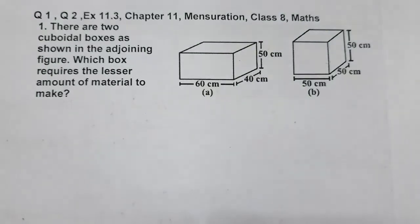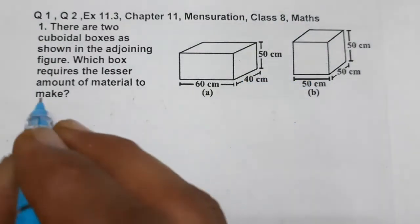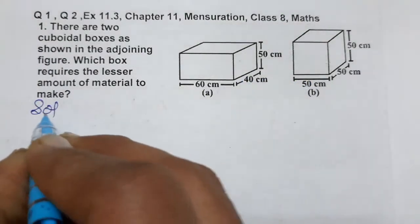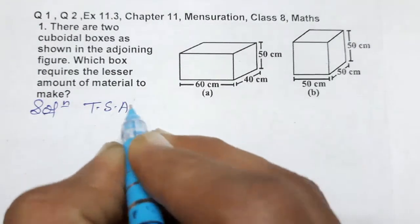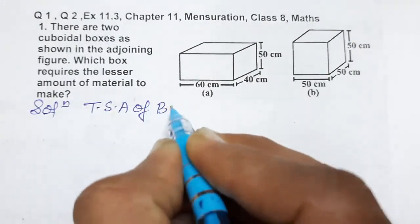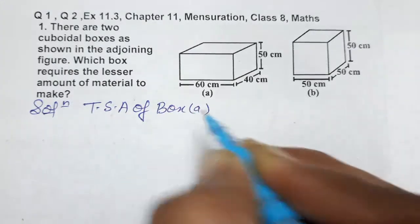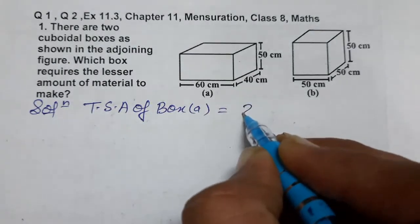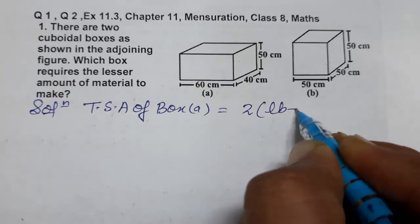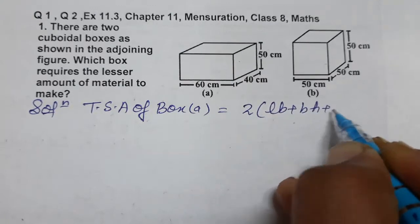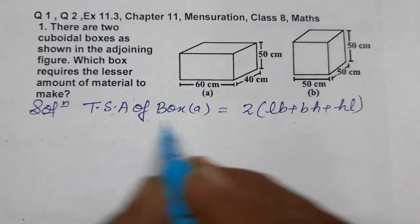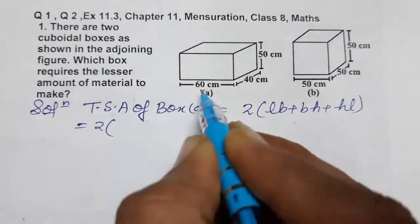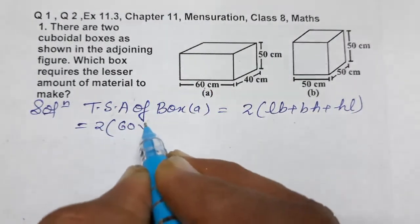Let's find the total surface area of Box A. We know total surface area equals 2(LB + BH + HL), which is 2 times length into breadth plus breadth into height plus height into length. Let's put the values: length is 60, breadth is 40, and height is 50.